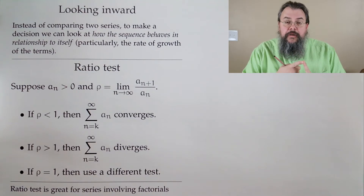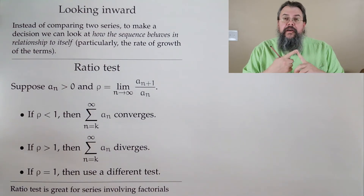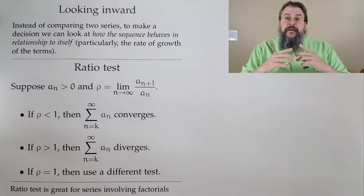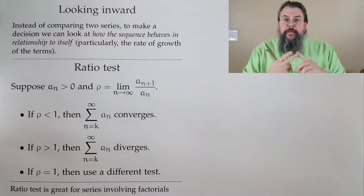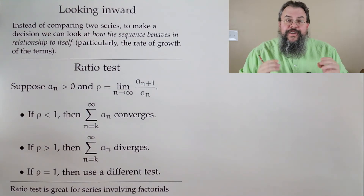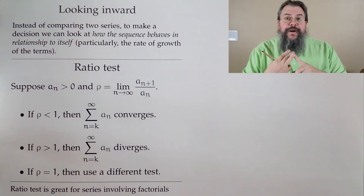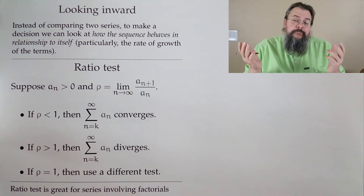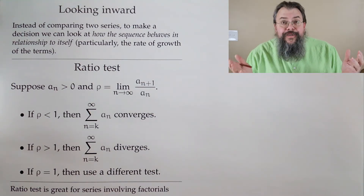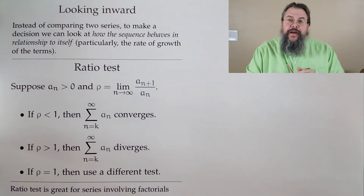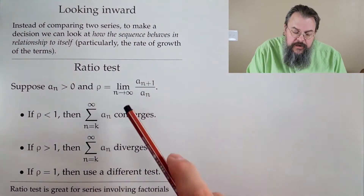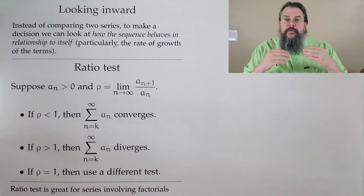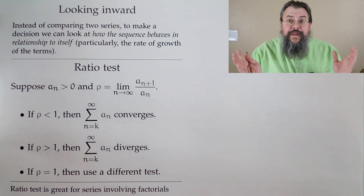There are a couple of possibilities. Maybe the limit is below 1 — in that case our conclusion is the sum converges. Maybe the limit is above 1 — then the sum diverges. Or maybe the limit is 1, and we say, I don't know, try something else. By understanding what's happening to this limit, we can make a decision: converge, diverge, or try something else.